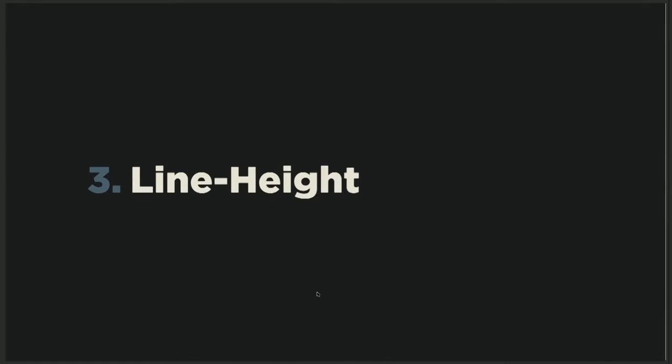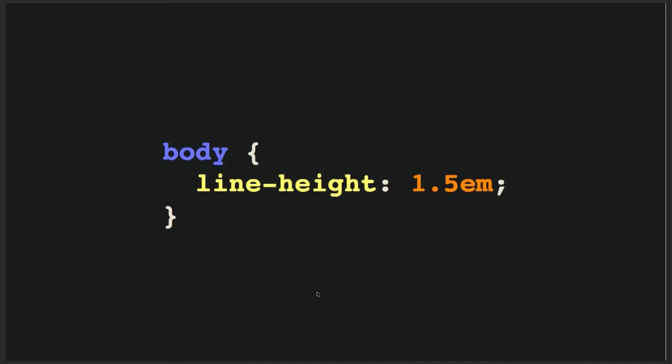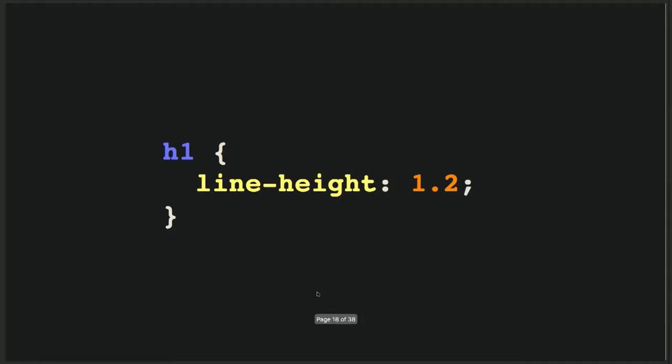Rule number three: line height. You should set an appropriate line height — it's really important and can literally make or break your design. It defines the amount of space that goes above and below a single line of text. It's good practice to set line height in scalable units like ems, or even with just numeric values without units at all. As a rule of thumb, the best line height for body text should be around 1.5, and for headings around 1.2. These values are approximate and can differ for different typefaces, but they should stay in that range.